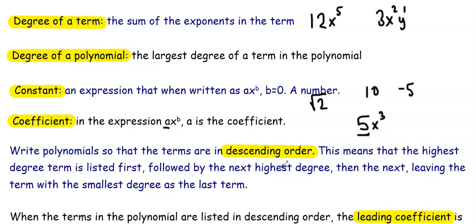When we write polynomials, we write them so that the terms are in descending order. That means that the highest degree term is listed first, followed by the next highest degree, then the next, leaving the term with the smallest degree as the last term.